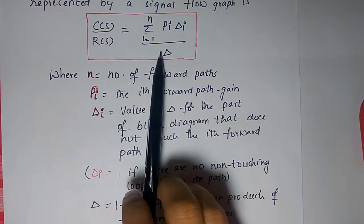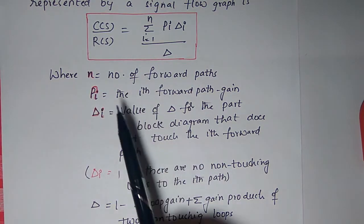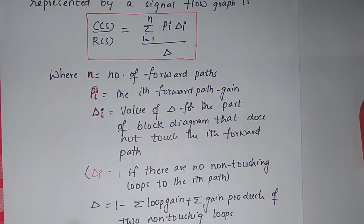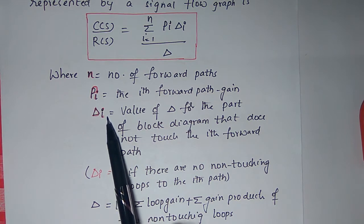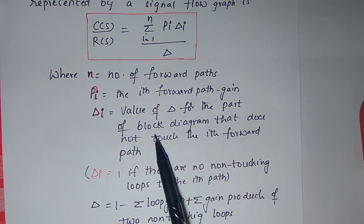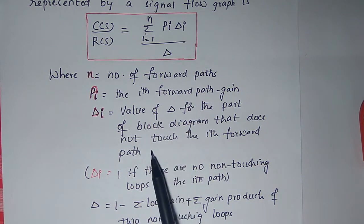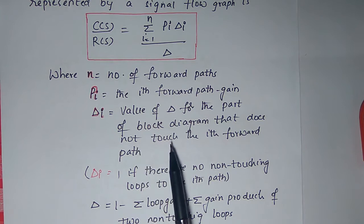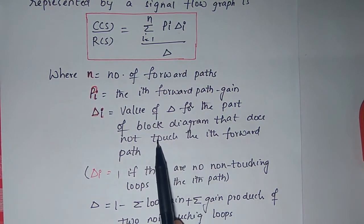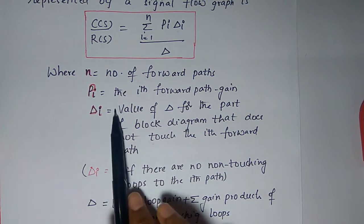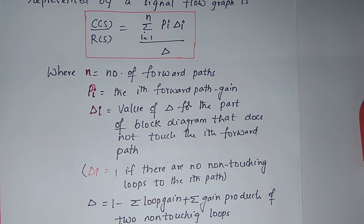Here, n is the number of forward paths and Pi is the i-th forward path gain. That means P1 is the gain of the first forward path. Δi is the value of Δ for that part of the block diagram that does not touch its forward path — meaning if some loops are not touching that forward path, then Δi corresponds to those non-touching loops.